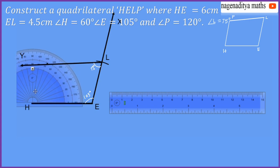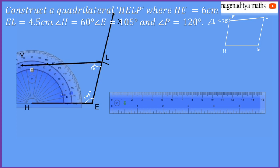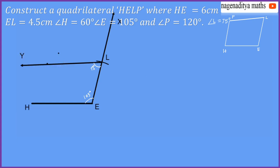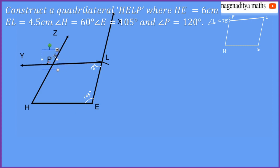Take the protractor again and put it at point H. Now we have to represent an angle of 60 degrees. Put the point there, join H and the point — that ray is denoted as ray HZ. The ray LY and ray HZ intersect at point P. So we got quadrilateral HELP. The point of intersection of the two rays is denoted by the letter P.